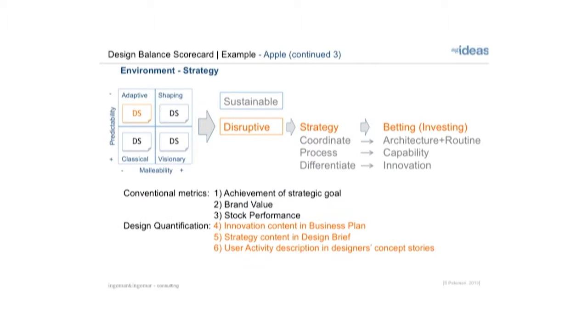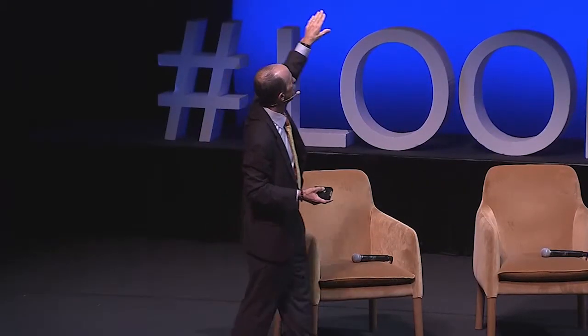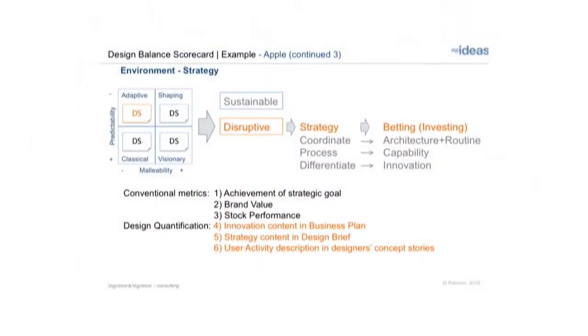Looking at the metrics briefly: conventional metrics for breakthrough are achieving alignment with your strategic goals, increasing your brand value, and increasing stock performance. In design quantification, we look at innovative content, innovative business plan, strategy content, and design brief — including what kind of user activities people are focusing on in the design brief. Those are the disruptive strategy and betting metrics for measuring your various design scorecards.